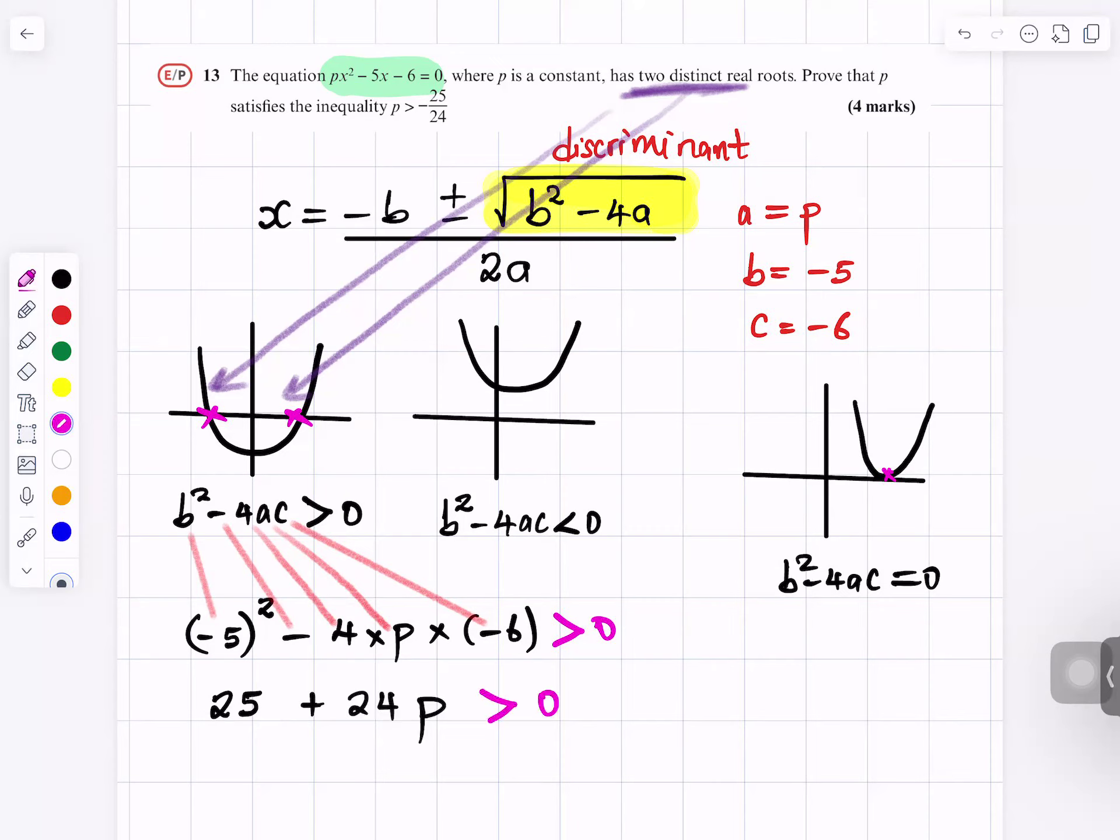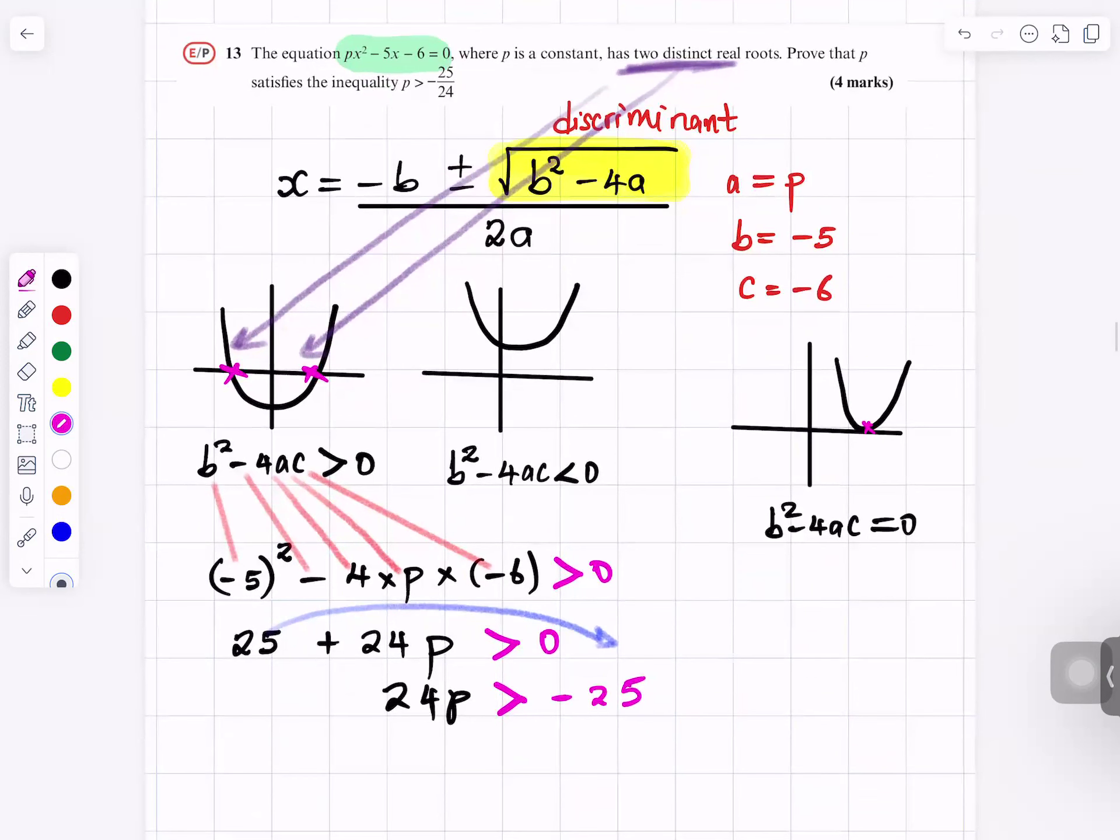You want to make P the subject. You take the 25 to the right-hand side. You get 24P is greater than minus 25. You happy with that? Yes, sir. And then what would P be? P will now be greater than minus 25 over 24.